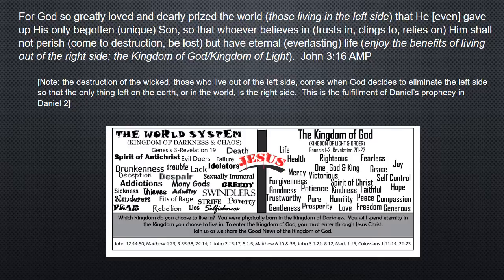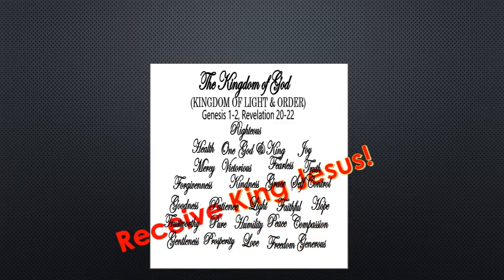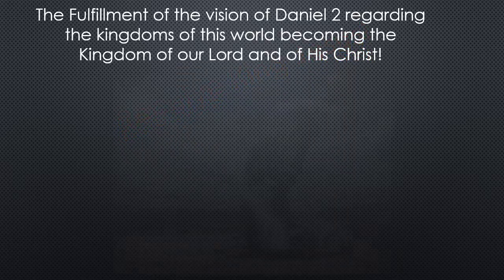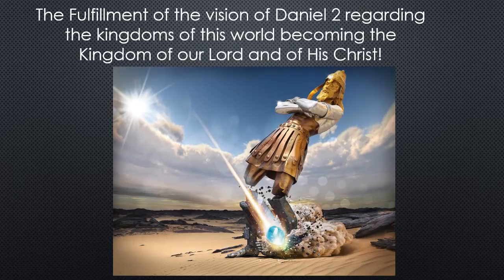The destruction of the wicked — those who live out of the left side — comes when God decides to eliminate the left side. If the only thing left on earth or in the world is the right side, this is the fulfillment of Daniel's prophecy in Daniel 2, and also in Revelation 20 through 22. There's going to come a time when the king of the kingdom of God will say enough, and that the left side has wreaked enough havoc, and it's time to be eliminated. He will do away with all of those who want to participate in the world system, who have not decided they want anything to do with the kingdom of God. He will remove them — and that's where the destruction will come in — and they will be removed from ever seeing the kingdom of God. That'll be a sad day, and we don't want that to happen to anybody.